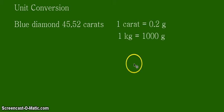Alright, so let's do that by looking at our equivalent statement. So we have here our equivalent statements. We have 1 carat is equal to 0.2 grams approximately.